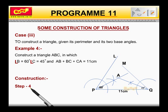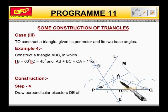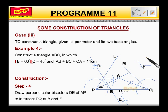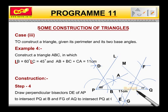Step 4: Draw perpendicular bisectors DE of AP to intersect PQ at B and FG of AQ to intersect PQ at C.